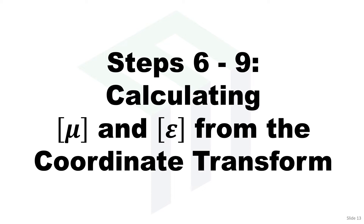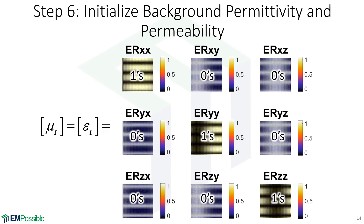Calculating permeability and permittivity from the coordinate transform. The first step is we need our background permeability and permittivity — I'm starting with vacuum here, or just air. We initialize tensors, coming away with 18 two-dimensional arrays: nine for permeability and nine for permittivity. If the permeability and permittivity start the same, they will also end the same, so we may only need to do one and copy the answer. We initialize the diagonal arrays with ones and all off-diagonal arrays with zeros — that's just air, and air is isotropic.